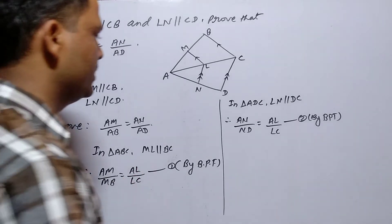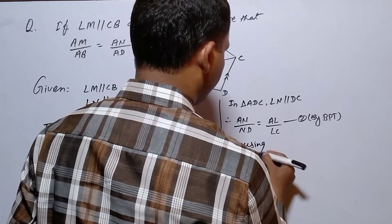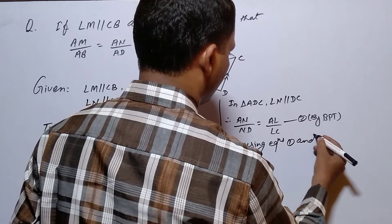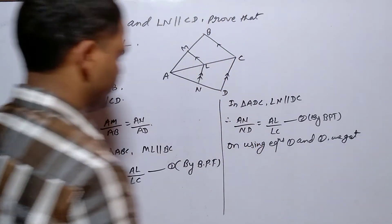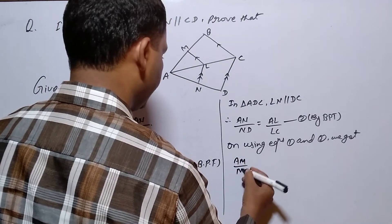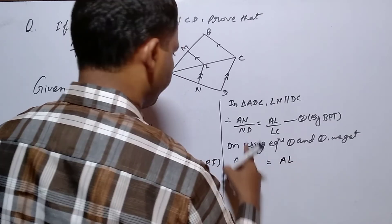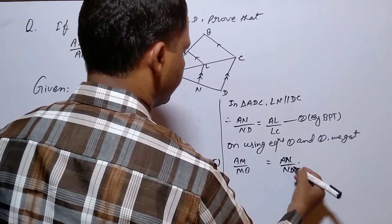So what do we do here? On using equations 1 and 2, we get AM by MB is equal to AN by ND.